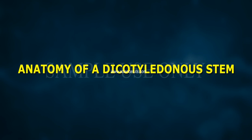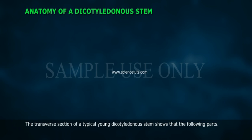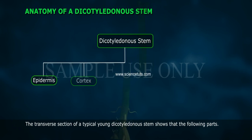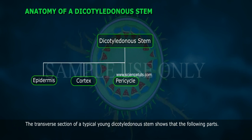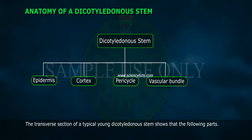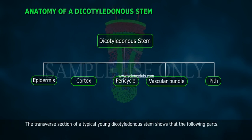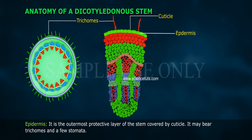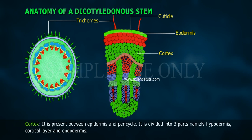Anatomy of a dicotyledonous stem. The transverse section of a typical young dicotyledonous stem shows the following parts: epidermis, cortex, pericycle, vascular bundle, and pith. Epidermis is the outermost protective layer of the stem covered by cuticle. It may bear trichomes and a few stomata.